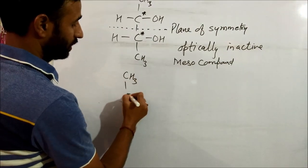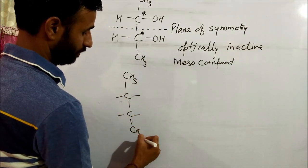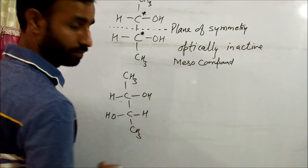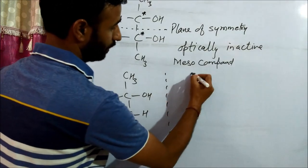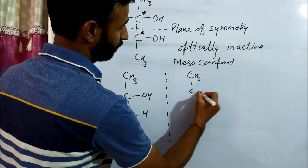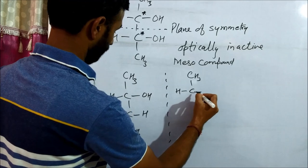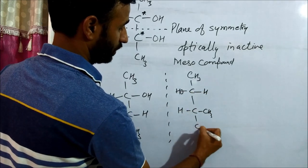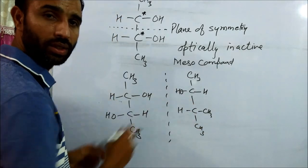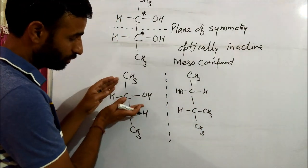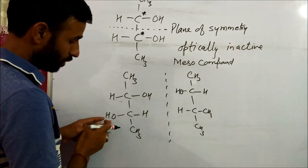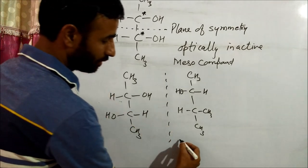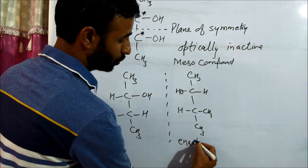If I write it like this, this is the mirror image and there is no plane of symmetry. Because if we cut, OH is on the left side here, OH is on the right side. That means they are enantiomers.